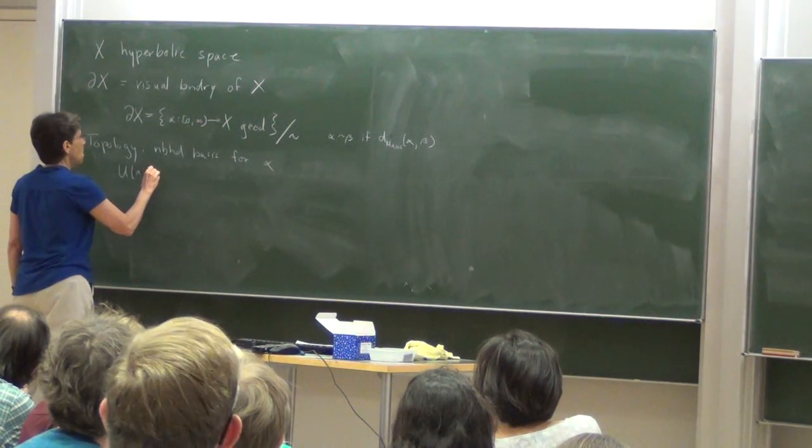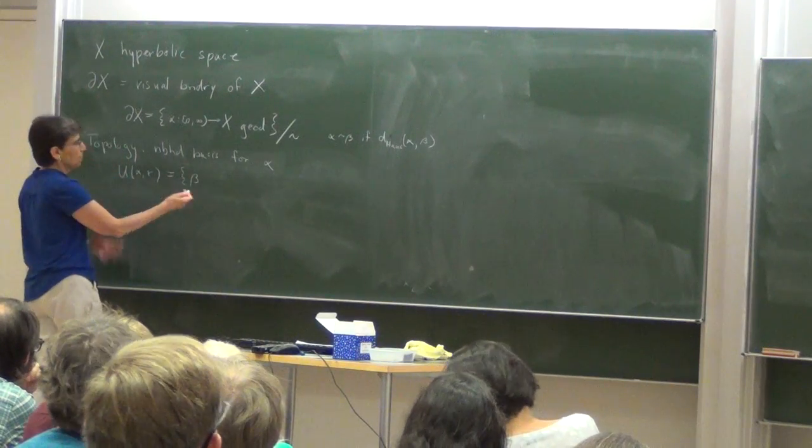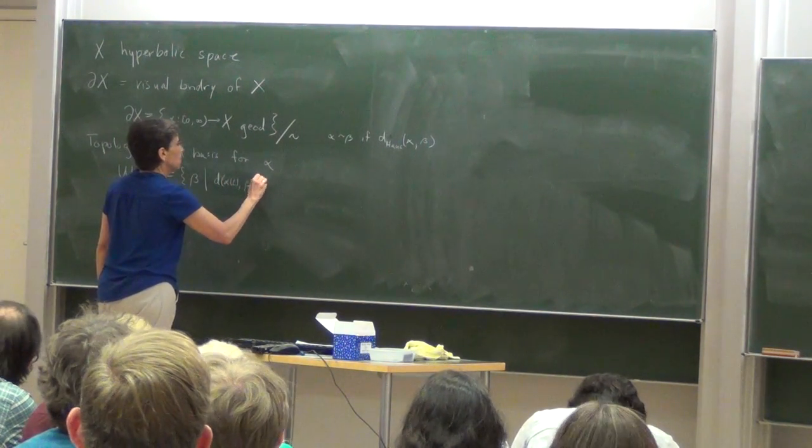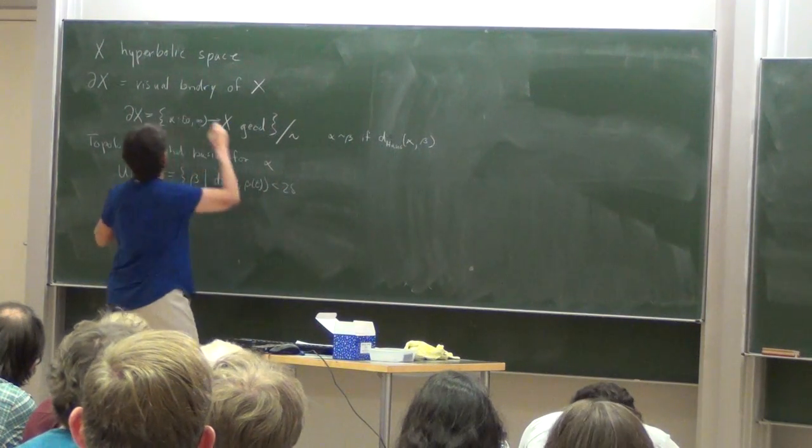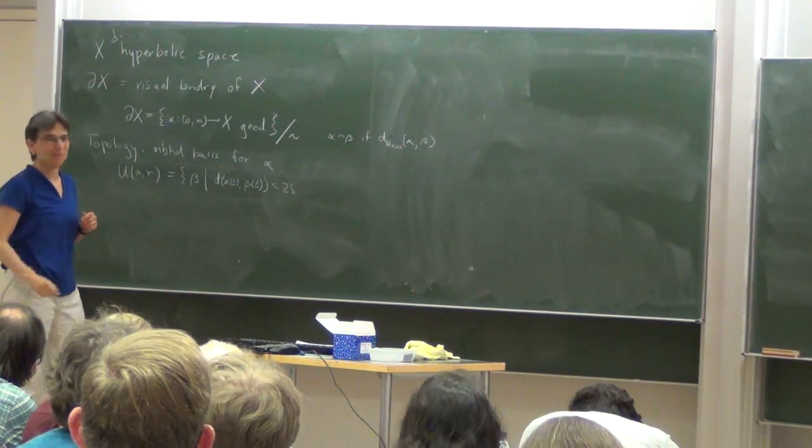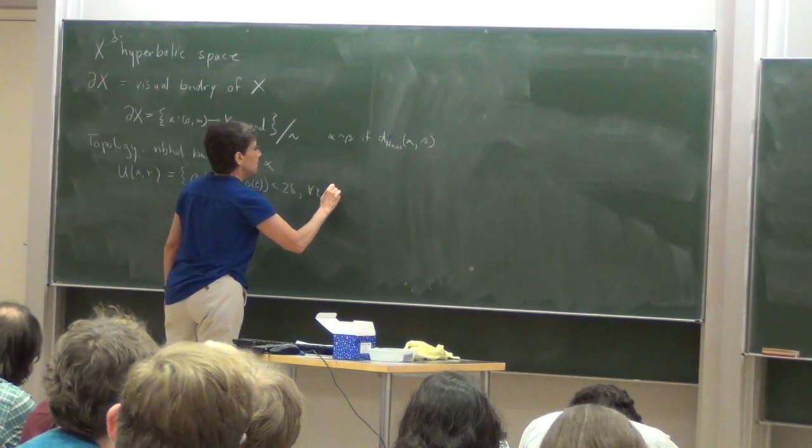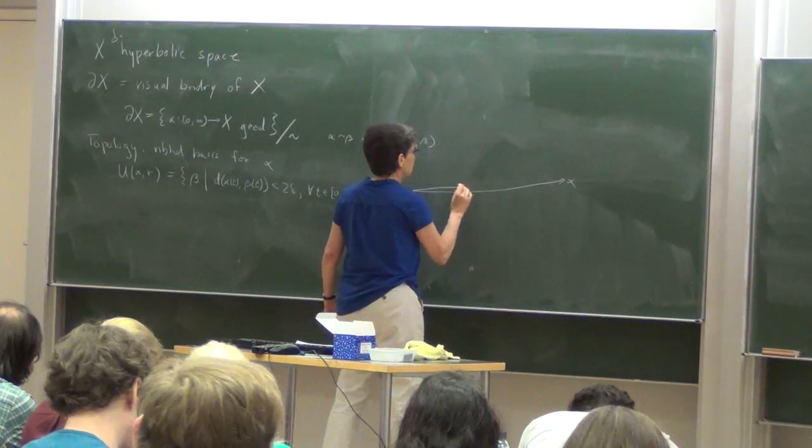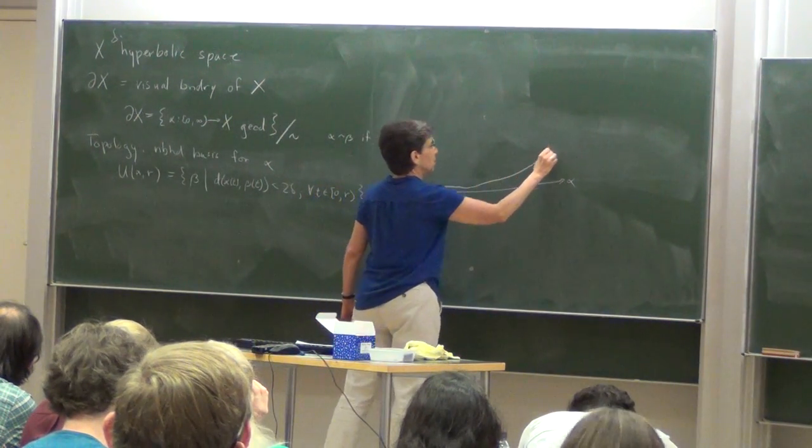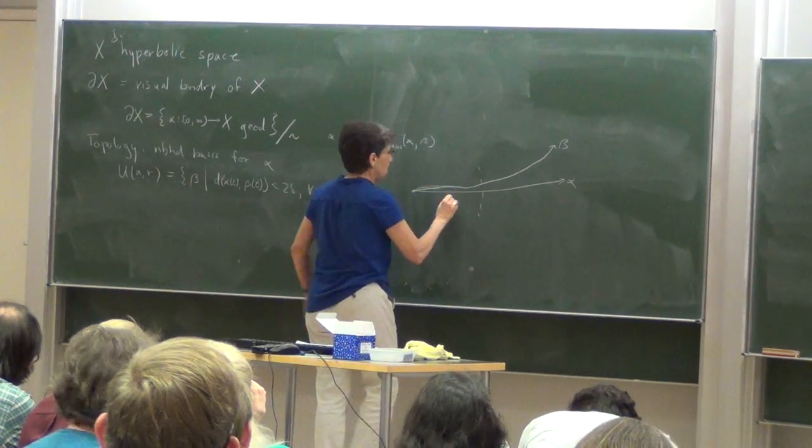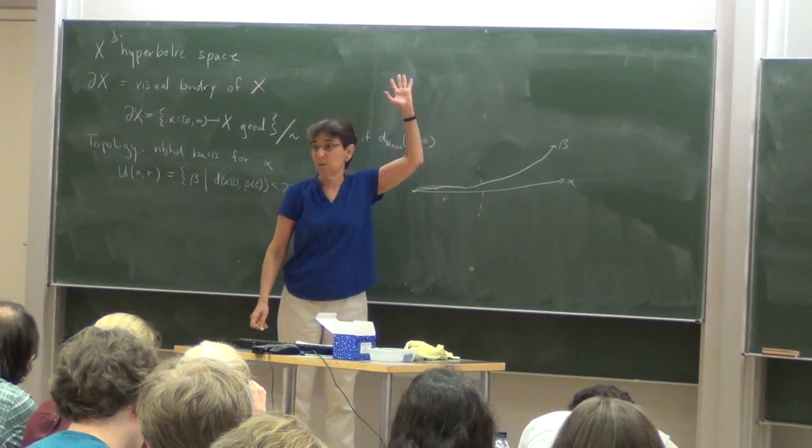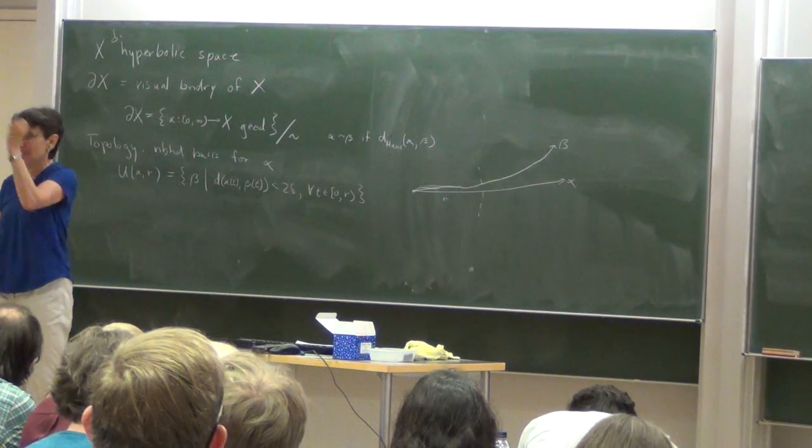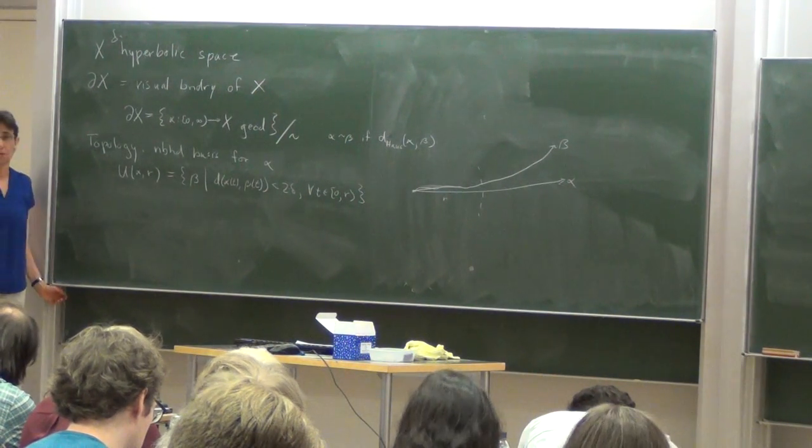Basis for neighborhoods around some element alpha or equivalence class of alpha. So this is sets of the form U alpha bar, which are equivalence classes of rays beta, such that the distance from alpha t to beta t is less than 2 delta for all t less than r. In other words, we have alpha, and we want beta to stay close to alpha for the first bar for a while, and then it can go off and do whatever after that. And then by taking larger and larger r's, they stay close longer and longer. And that turns out to give a neighborhood basis for topology.